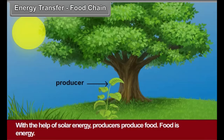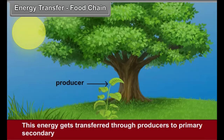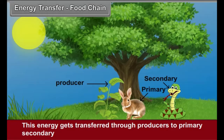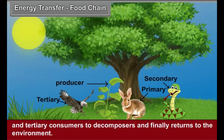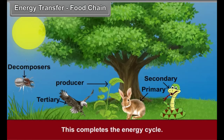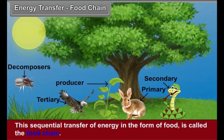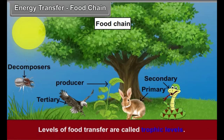Energy Transfer and Food Chain: With the help of solar energy, producers produce food. Food is energy. This energy gets transferred through producers to primary, secondary, and tertiary consumers, then to decomposers, and finally returns to the environment, completing the energy cycle. This sequential transfer of energy in the form of food is called the food chain. Levels of food transfer are called trophic levels.